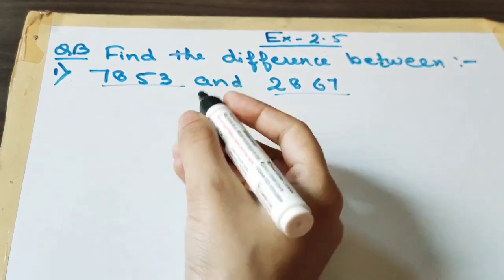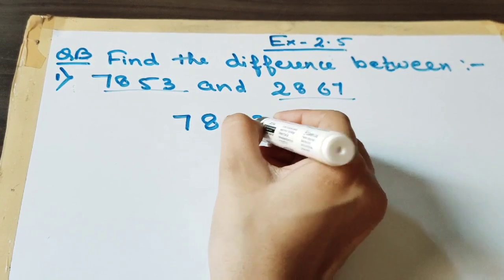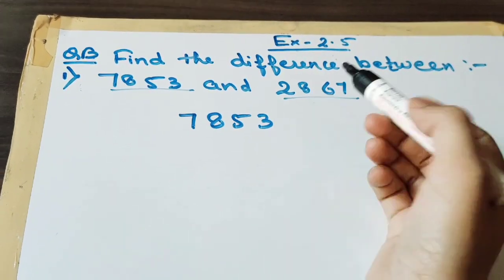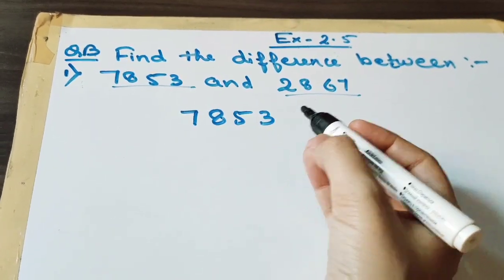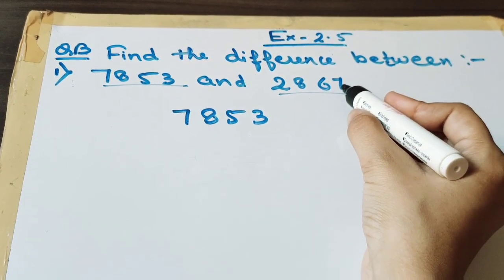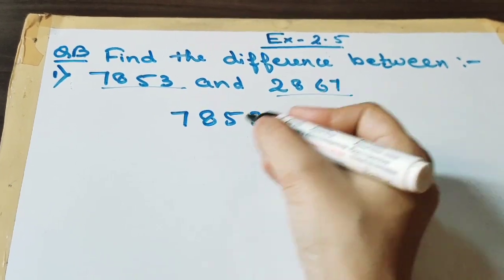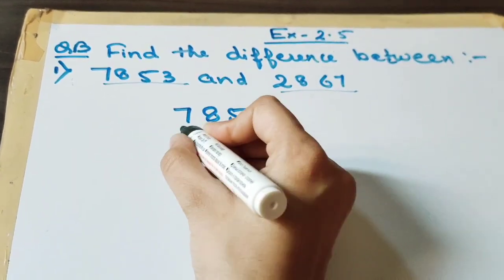So the bigger number we will write as a minuend and the smaller number we will write as subtrahend. Remember that again we have to write according to the places. 7 is at the 1's place. Then 6, then 8 and then 2.